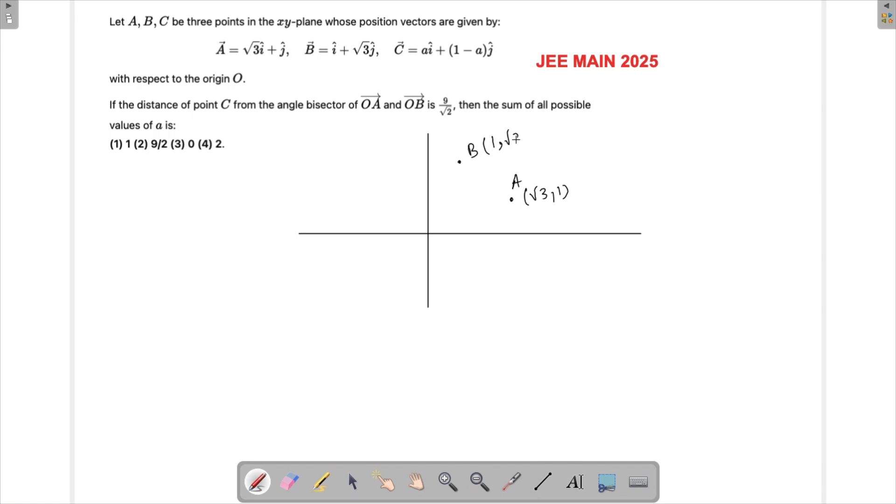And then if you're looking at point B, then this point is over here which is B which is 1 comma root 3. So if you're looking at the line which is passing through OA, so this is the one which is passing through OA. And if you're looking at this line which is passing through OB, then there will be the angle bisector of it which is there.